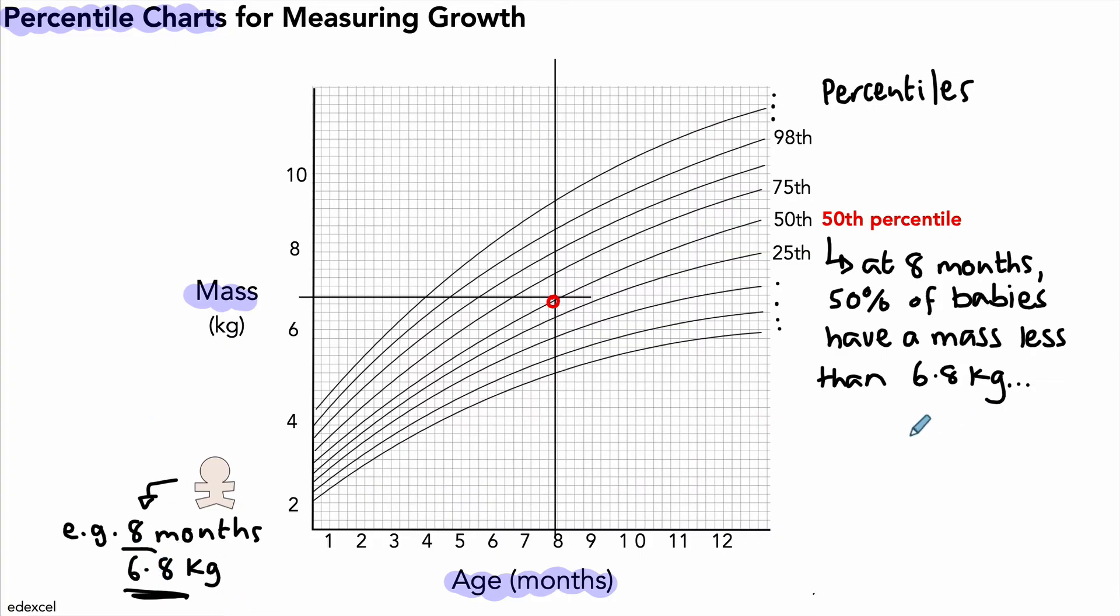What if we had a baby whose mass fell on the 25th percentile? What would that mean? Well, from the chart we can see that for the 25th percentile, 25% of babies of that age have a mass below that value. And what do we mean by that value? It's a point that lies on that curve—so it could be, for example, 10 months and around...